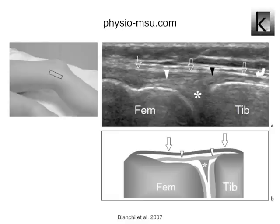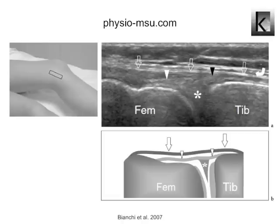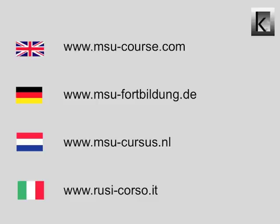MSU is patient friendly, easy accessible, has low costs and the system can be used everywhere, even directly on the sports field. Another important advantage is the possibility of real-time scanning with a dynamic, functional evaluation of a structure. MSU can be used for diagnosing and support in clinical reasoning, for evaluating connective tissue repair, motivating and informing patients, and for biofeedback purposes like retraining muscle groups. Visit the provided links for more information about MSU and tailor-made MSU courses for physiotherapists.